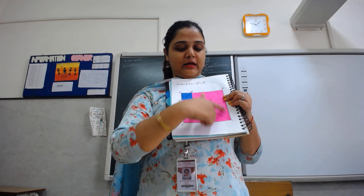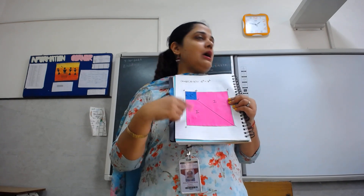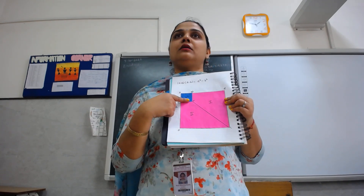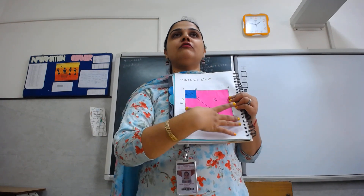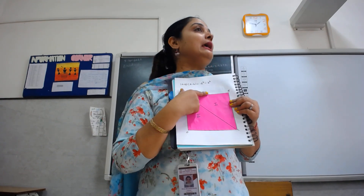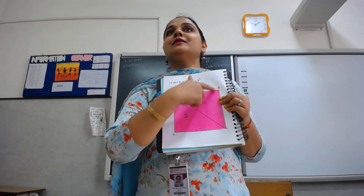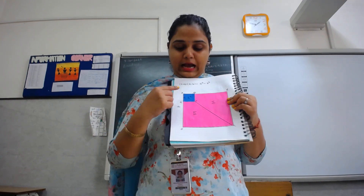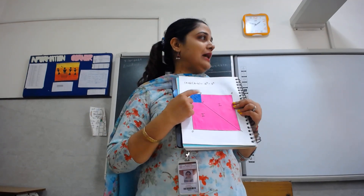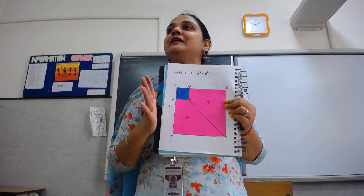I have taken a pink one, that is a squared paper, and I pasted this blue on that. I am assuming that the side of this pink one, the bigger one, is a. So the bigger square is representing a squared. And I am assuming that the side of the smaller one is b, so the smaller one is representing b squared.